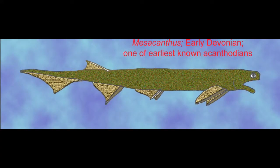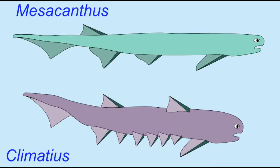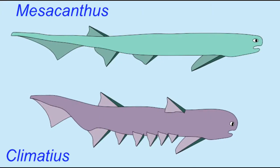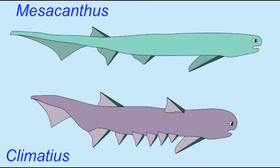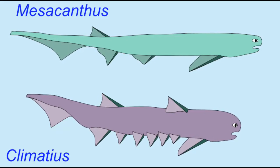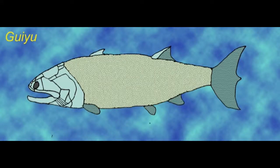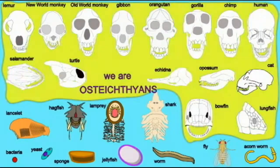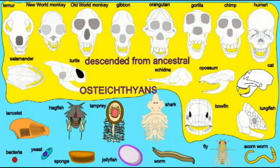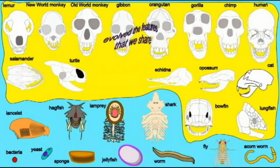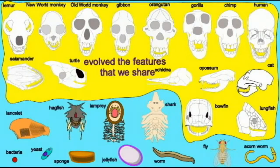The acanthodians possessed smaller bony elements, but once again, homology is not certain. However, in the late Silurian period, there were the first osteichthian fish — the first bony fish of the group alive today.